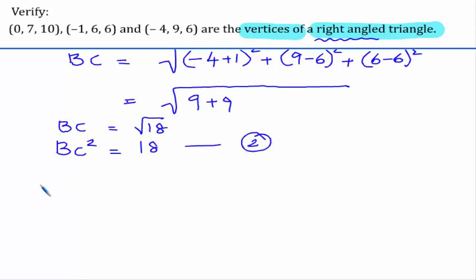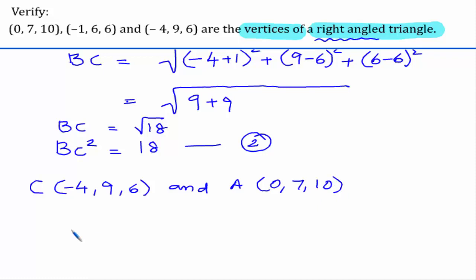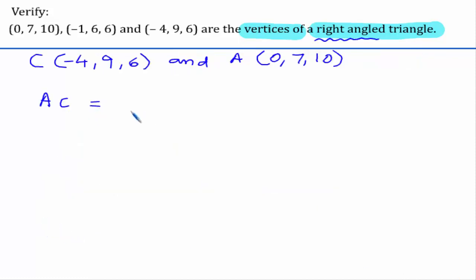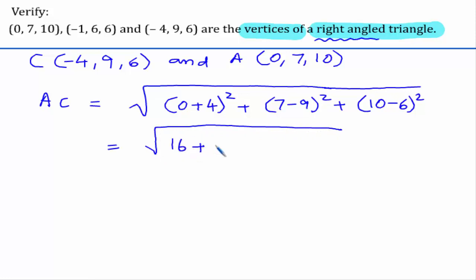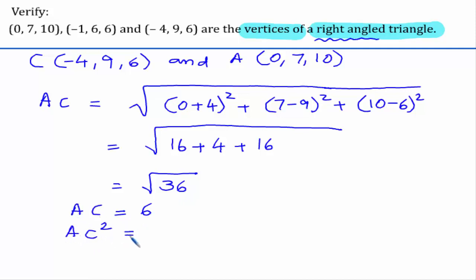Now let us consider C as (-4, 9, 6) and A as (0, 7, 10) and find distance AC. We get: (0 plus 4) whole square plus (7 minus 9) whole square plus (10 minus 6) whole square. Simplifying: 4 squared is 16; 7 minus 9 is minus 2, whole square is 4; 10 minus 6 is 4, whole square is 16. We get root 36, which is 6. So AC is 6, and therefore AC squared is 36.